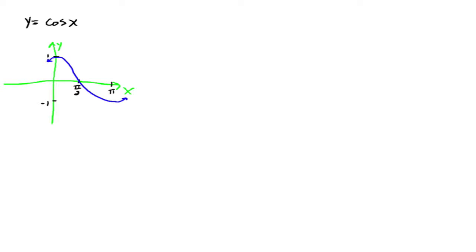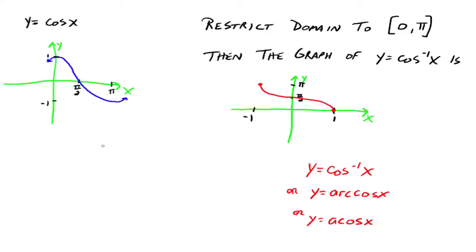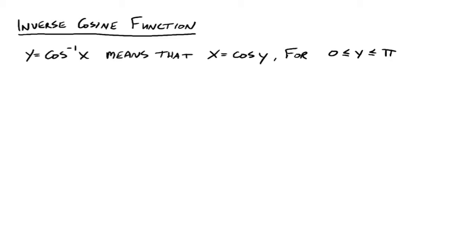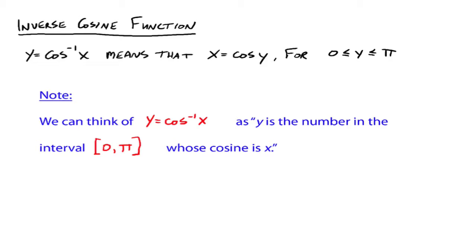Let's go into cosine. There's the graph of cosine — we're going to restrict the domain on cosine as well, to be between 0 and pi. When we do that, we have a one-to-one function. When you switch all the ordered pairs, the graph starts at negative 1 comma pi, goes through 0 comma pi over 2, and comes down to 1 comma 0. The notation is cosine inverse of x, or arc cosine of x. y equals arc cosine of x means x equals cosine y, where y is between 0 and pi, including endpoints. We can think of y equals arc cosine of x as: y is the number in the interval 0 to pi whose cosine is x — we're looking for an angle whose cosine is x.